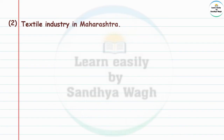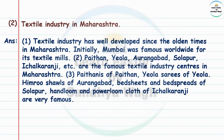Textile Industry in Maharashtra: The textile industry has been well-developed since olden times in Maharashtra. Initially, Mumbai was famous worldwide for its textile mills. Paithan, Yevla, Aurangabad, Solapur, and Ichalkaranji are famous textile industry centers in Maharashtra. Paithani sarees of Paithan, Yevla sarees of Yevla, Himroo shawls of Aurangabad, bed sheets and bedspreads of Solapur, and hand loom and power loom clothes of Ichalkaranji are very famous.